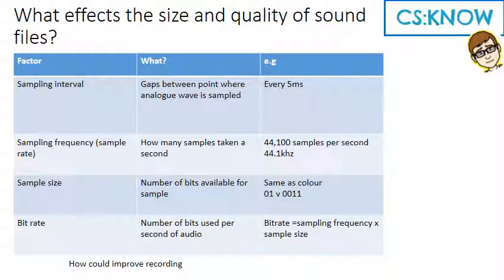It's the same as colours. If you're trying to make a picture using only one bit, that's only black or white. If you're doing a two bit, then you can store like four colours. So the more bits you've got, the more sample you can save.